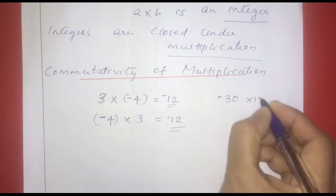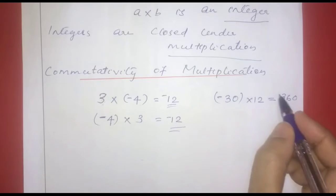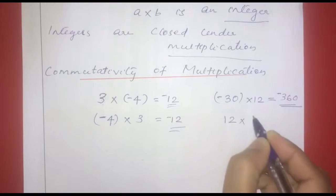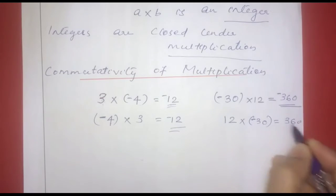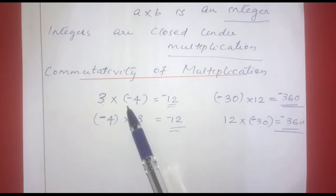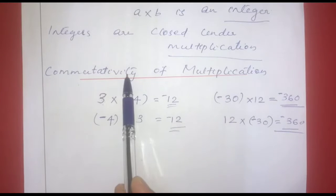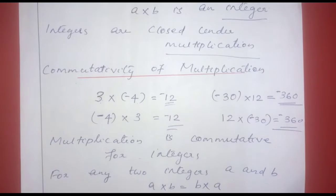Another example: negative 13 into 12. We change the order — 12 into negative 13 — and we get the same answer. So multiplication is commutative for integers. For any two integers A and B, A into B is equal to B into A.